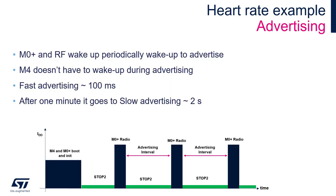Before we check the measurement, let's look at what we expect to see. After powering the board, CM4 and CM0+ perform initialization of peripherals and the BLE stack. The application then goes to fast advertising mode with a period of about 100 milliseconds. After one minute, the advertising period slows to about 2 seconds. Between advertising intervals the MCU is in stop mode with consumption in the range of a few microamps. During the advertising event we will see increased consumption in the range of milliamps, caused by radio and CM0+ activity.